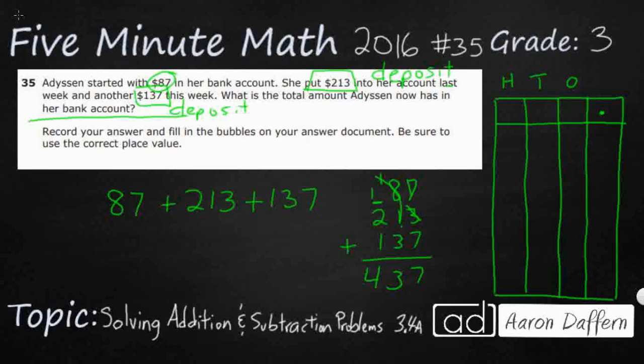So you can write your number in up here, 437. But these answer documents are scored by a machine, and they're not really reading the numbers up here. Actually, what they're reading is your bubbles down here. So you've got numbers from zero all the way down to nine in each of these columns.